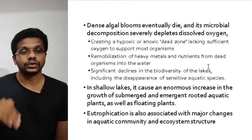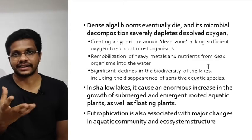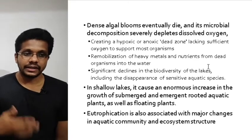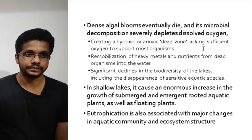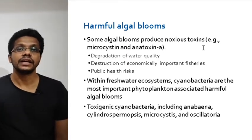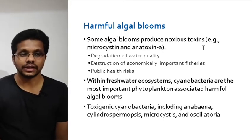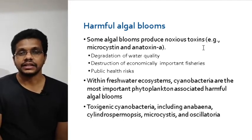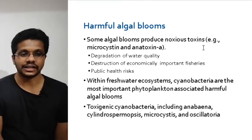In shallow lakes, eutrophication promotes the growth of floating plants or floating weeds like water hyacinth, which grow due to the presence of large amounts of nutrients. Eutrophication is associated with major changes in the aquatic community and ecosystem structure. It is also associated with harmful algal blooms — algae growing due to increased nutrients can produce neurotoxins that are harmful to humans and aquatic organisms. Cyanobacteria such as Anabaena and Microcystis are among the organisms that produce these toxins.